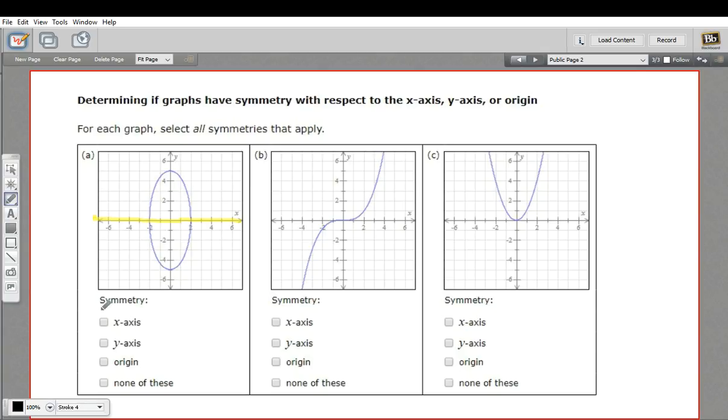You can see that's the case here. So this graph has x-axis symmetry. The way to think about that in terms of coordinates is if you have the coordinate (x, y), you're going to have the coordinate (x, negative y) as well. So here's an (x, y), here's an (x, negative y). That shows x-axis symmetry.